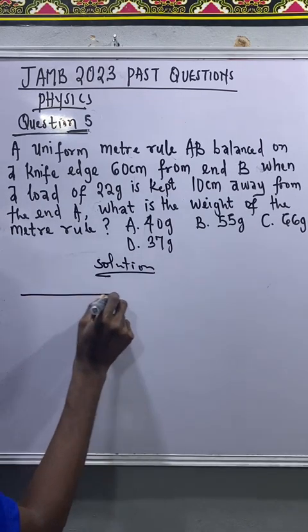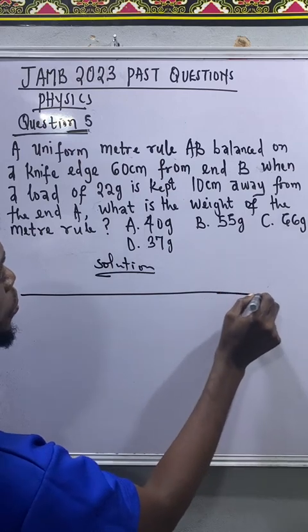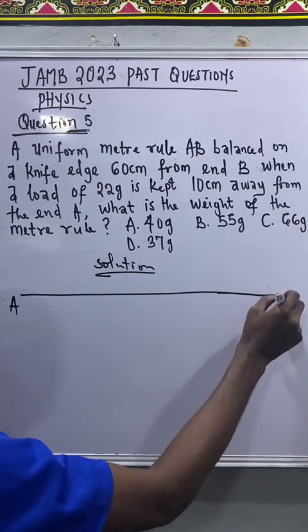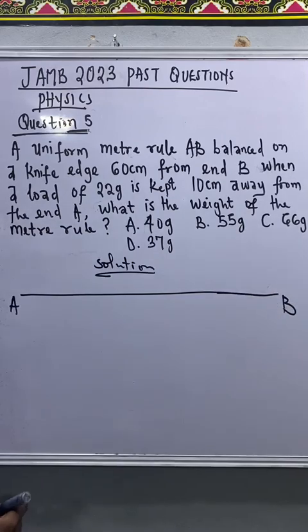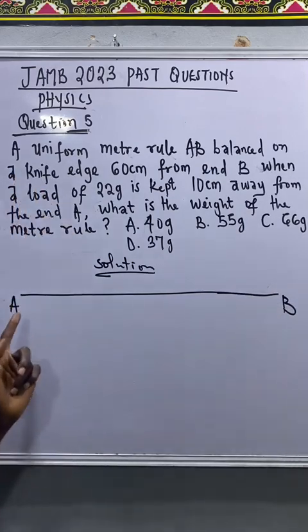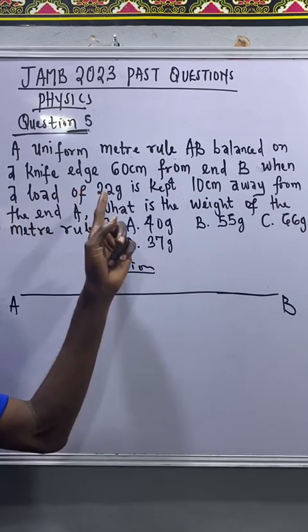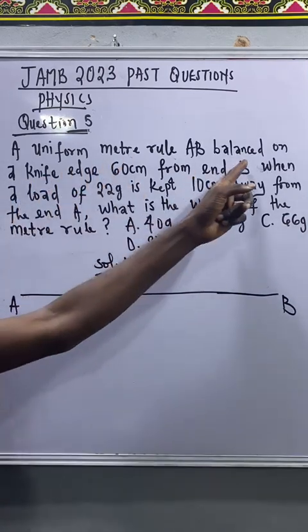Let's start with geometry of the problem. First of all, let me represent my metal rule in a simple way. So let's say this is end A and this is end B, and you know that from A to B that's 100 centimeter.